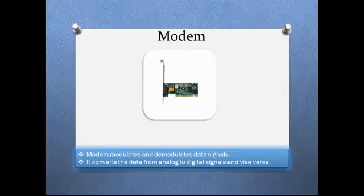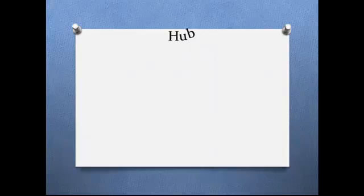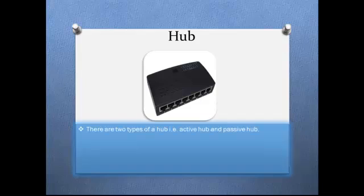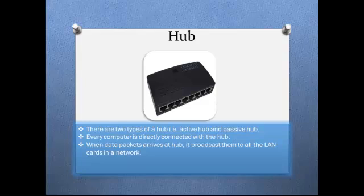The central connecting device in a computer network is known as a hub. There are two types of hub: active hub and passive hub. Every computer is directly connected with the hub. When data packets arrive at the hub, it broadcasts them to all the network cards in the network, and the intended recipient picks them up.